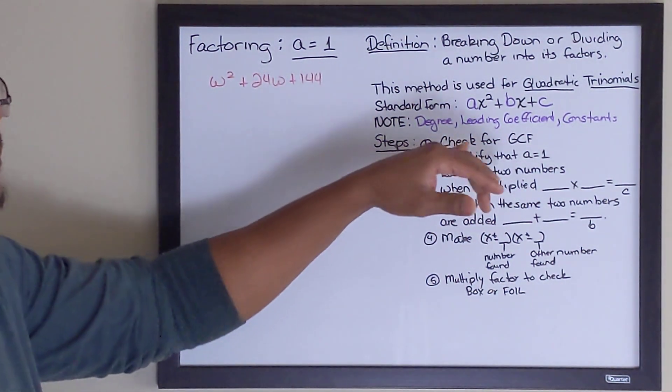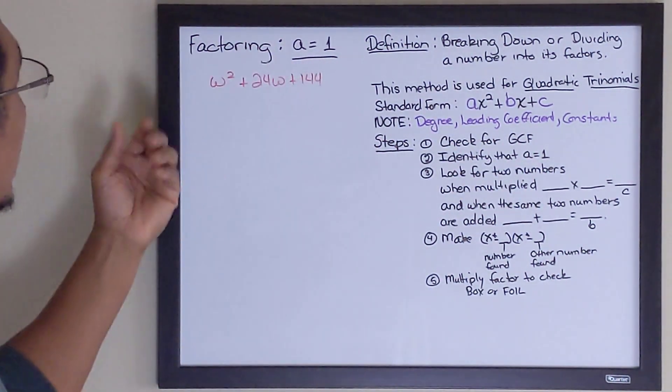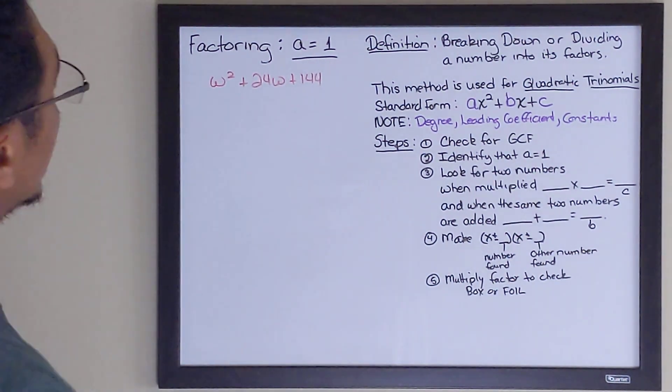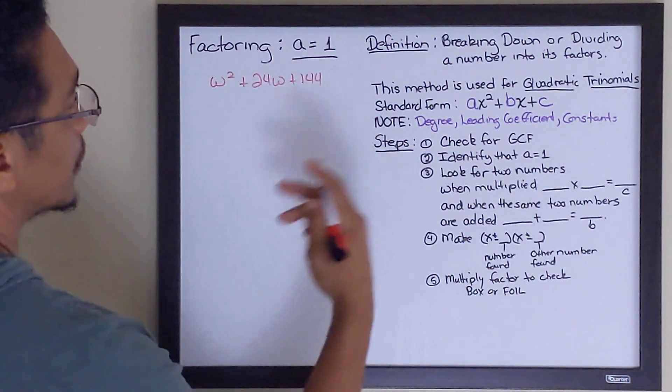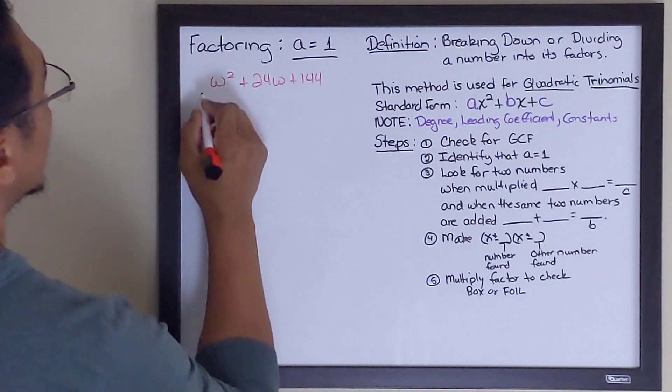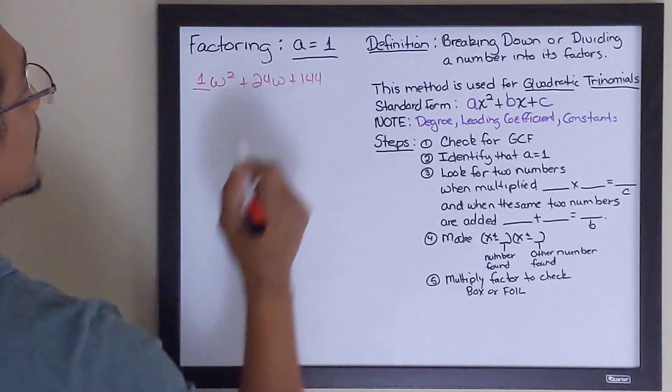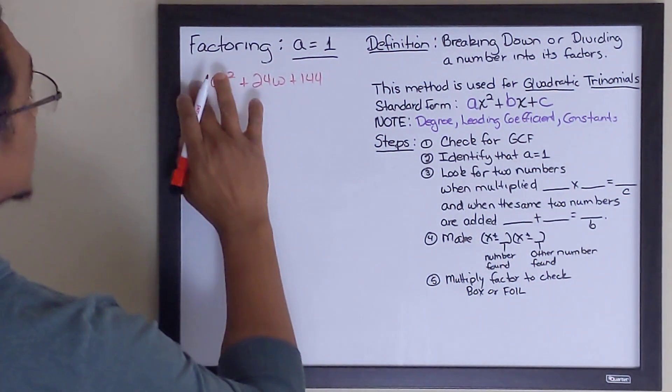First of all, we're going to check to see if there is a greatest common factor between each of the terms. If there is, we would take it out, and that actually involves another video that you need to look at. But in this case, there is no greatest common factor between these three terms. So we move on to step two. And I need to identify that a equals one. You can't see it right here, but it is a one. So that means we are going to use this method to factor this polynomial.